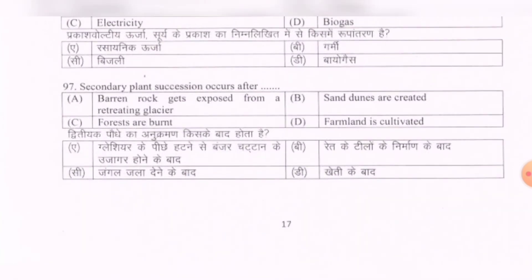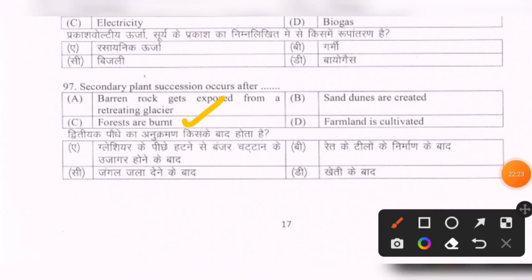Next question: Secondary plant succession occurs after — options are: barren rock gets exposed from a retreating glacier; sand dunes are created; forests are burnt; farmland is cultivated. The correct option is C — forests are burnt.